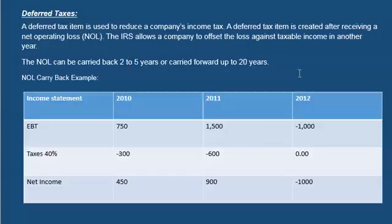A deferred tax item is used to reduce a company's income tax and is created after receiving a net operating loss. The IRS allows a company to offset the loss against taxable income in another year. The NOL can be carried back two to five years or carried forward 20 years. Let's take a look at an example.